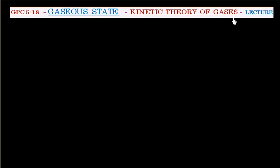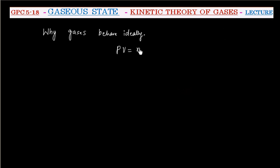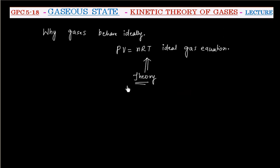In this lecture we will discuss kinetic theory of gases. The question is: why do gases behave ideally? That is, why do gases follow the equation PV = nRT? We have an observation that gases follow ideal gas behavior, and we are looking for a theory. Kinetic theory of gases is able to explain the ideal behavior of gases.